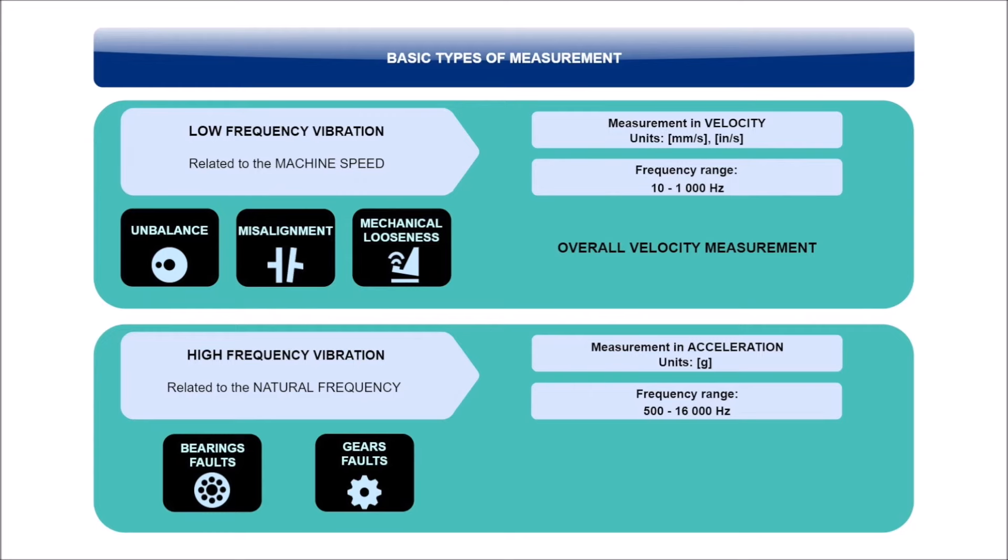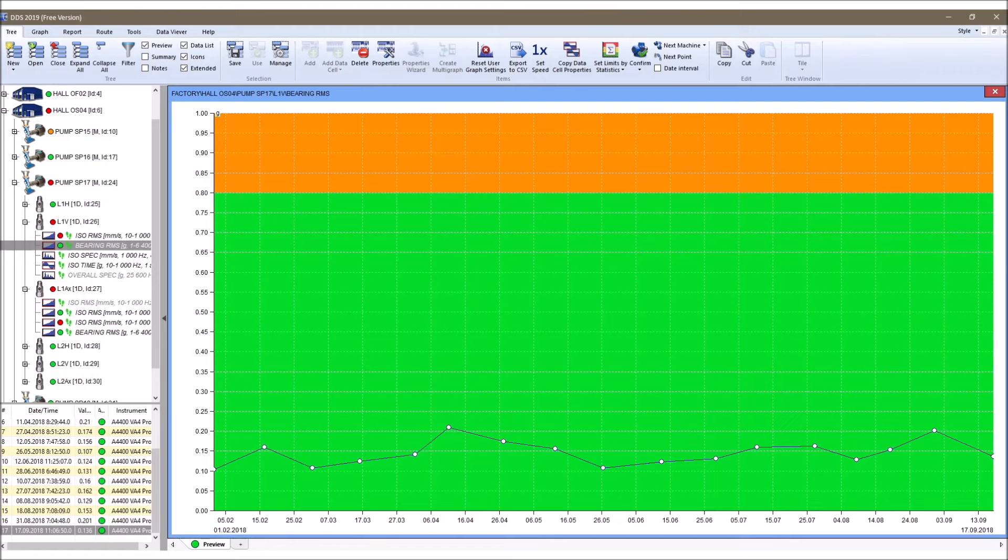So, the second measurement, which we will include in our regular machinery measurement, will be overall acceleration in G, in the range of 500 to 16,000 Hz. It is represented by one number. Again, using DDS software, we can trend this value in time and see its development.